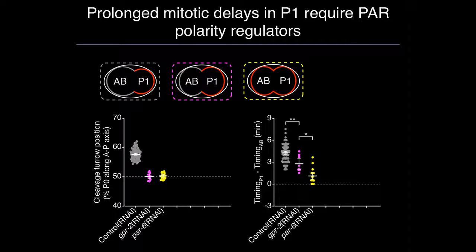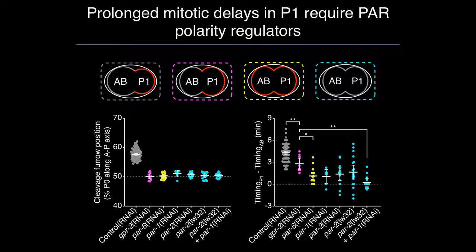We next depleted the anterior PAR protein PAR6 — again AB and P1 were the same size — and the difference in delay between the two cells was further reduced. When we depleted either of the posterior PAR proteins, PAR1 or PAR2, we saw a similar trend but a more variable phenotype. When we combined PAR1 RNAi with a PAR2 mutant, the difference in mitotic timing between the two cells was more or less suppressed. This suggests that in addition to cell size, either PAR proteins themselves or the asymmetric segregation of some fate determinant is contributing to the duration of checkpoint-dependent delays.